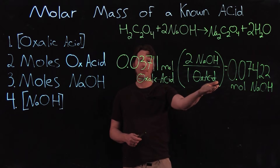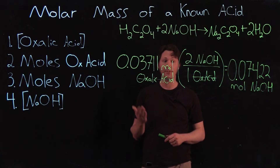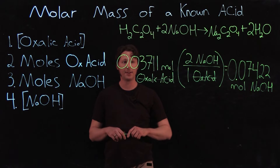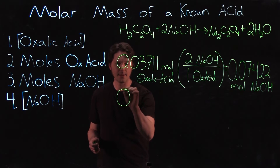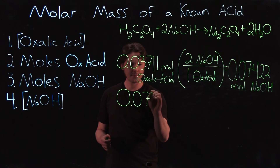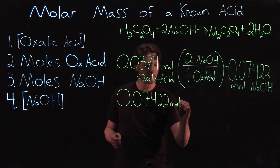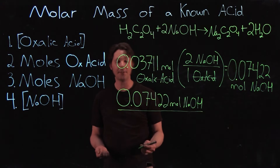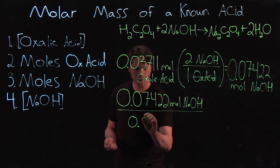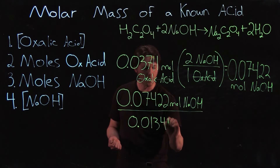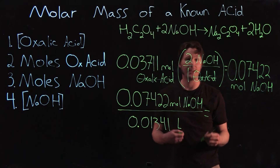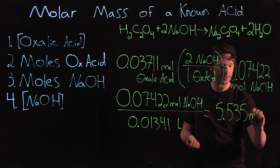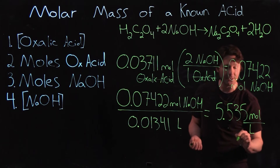If we take the moles of sodium hydroxide and divide by the volume of solution from your burette data, we get the concentration of the sodium hydroxide solution. For example, if you used 13.41 milliliters in your titration, we take 0.07422 moles of sodium hydroxide divided by 0.01341 liters. Moles divided by liters gives us a concentration of 5.535 moles per liter — that is the concentration of the sodium hydroxide solution.